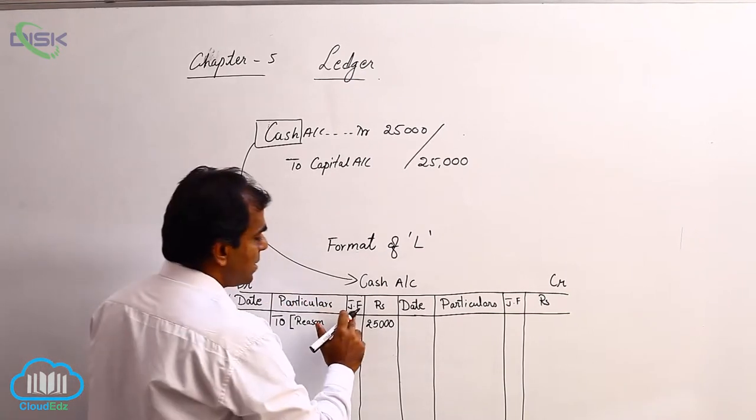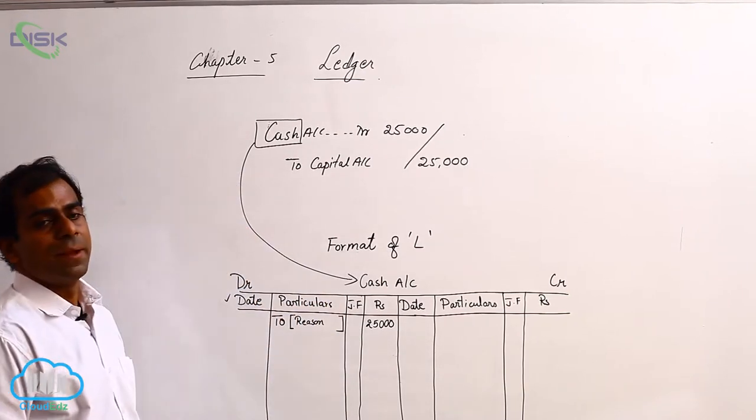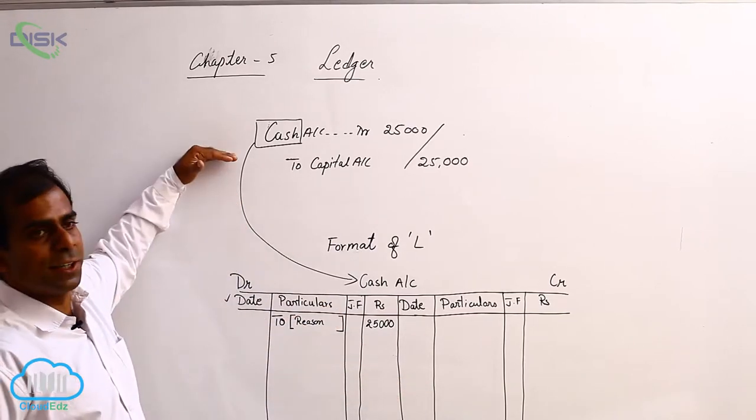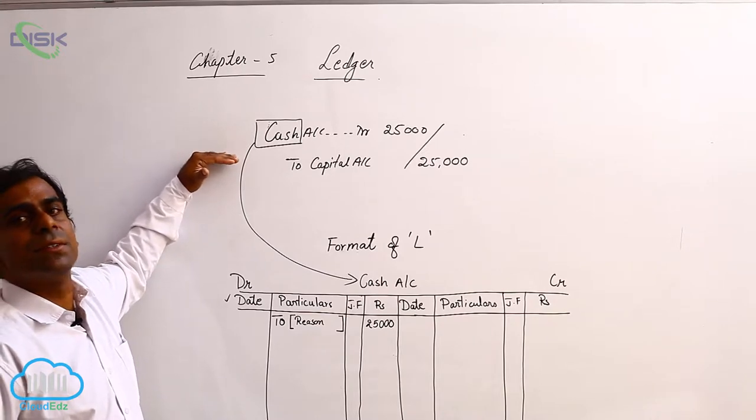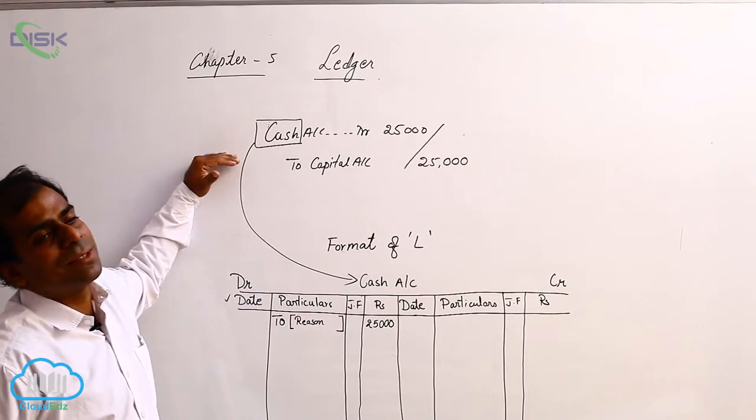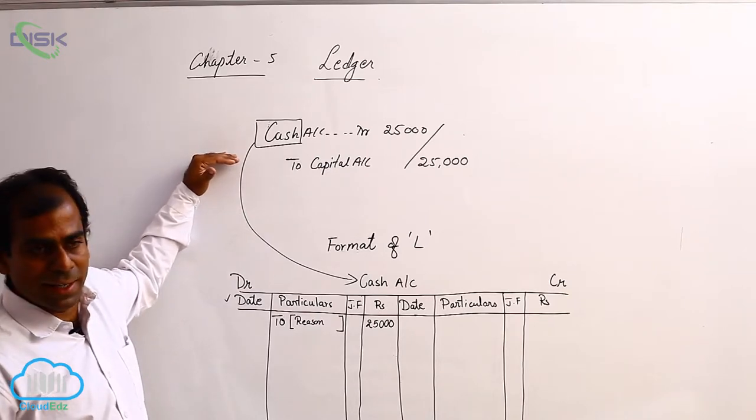What is journal folio? Journal folio is nothing but, for instance, if I take this journal entry, it might be written on a particular date. Since journal entries are many, you will be consuming lot of pages while writing them.